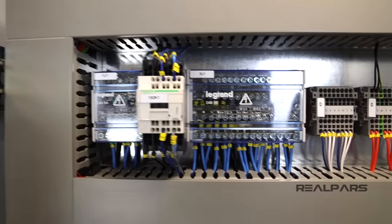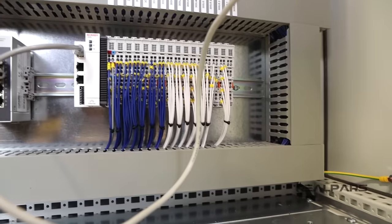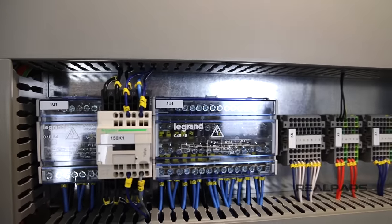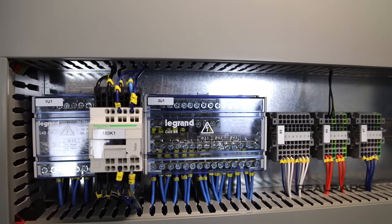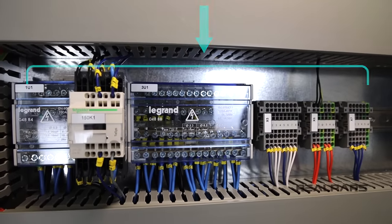These wires come all the way through the trunking, and then they are connected to these terminals here. So one end of the wires are connected to the PLC cards, and the other end is connected to these terminals. Now later, when we install this control panel in the field or the factory, the sensors will be connected to the other end of these terminals. How?